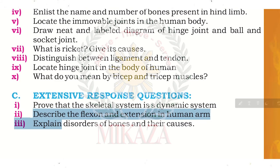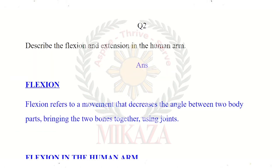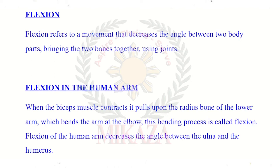Question number two: describe the flexion and extension in the human arm. Flexion refers to the movement that decreases the angle between two body parts, bringing the bones together using joints. In flexion, two bones move closer to each other at a joint, decreasing the angle between them. In the human arm, when the bicep muscles contract, it pulls upon the radius bone of the lower arm, which bends the arm at the elbow.